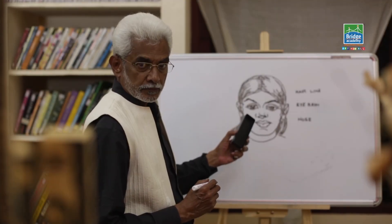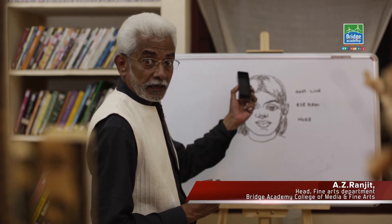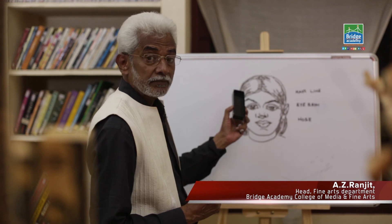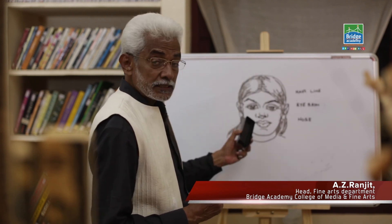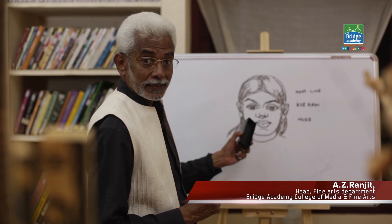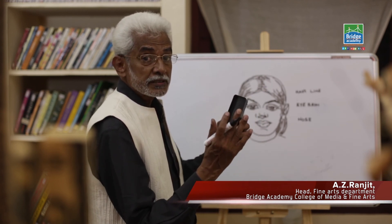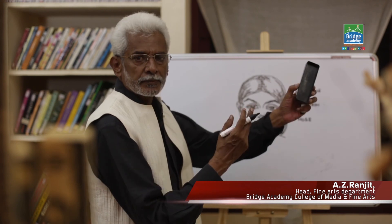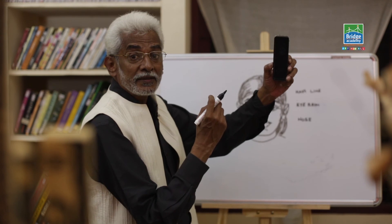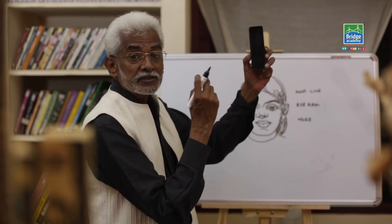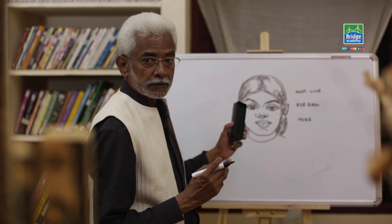Now we know the measurements: four, three — where the eyebrow comes, where the eyes come, where the nose comes. We have measurements. Practice this, and from there go into individual faces, looking at photographs or looking at people, and see what difference is there. When you add the difference, you will get the features right. This is how you draw a portrait.